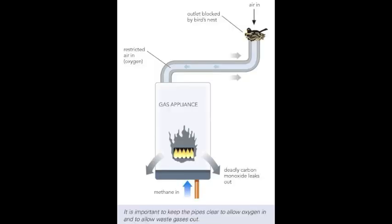Carbon monoxide is an odourless, colourless, toxic gas. It reduces the amount of oxygen that can be carried around the body in the blood. Around 40 people die each year in the UK from carbon monoxide poisoning due to a faulty gas boiler or fire. Hundreds more have to be taken to hospital.